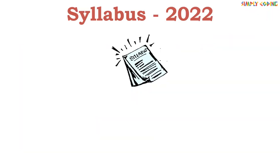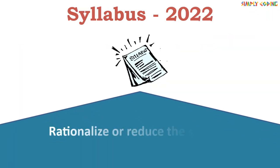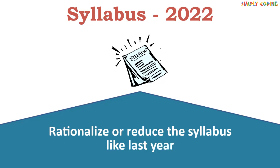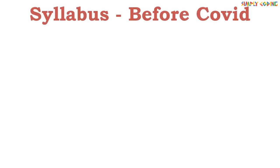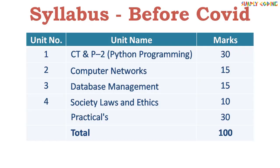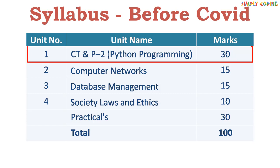They have also given Plan A, Plan B, and Plan C to outline how exams will be conducted if impacted by COVID. From the syllabus perspective, one important declaration is that they have decided to rationalize or reduce the syllabus, like they did last year. Before COVID, the class 12 computer science syllabus was divided into four units: Computational Thinking and Programming 2, which is Python programming.